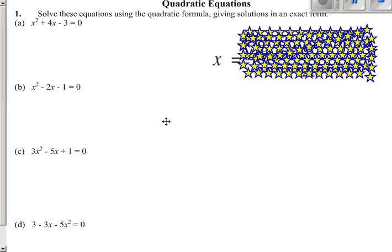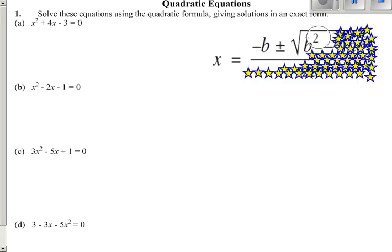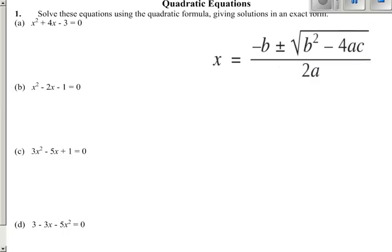The fourth review sheet is all using the quadratic formula, so the first thing you've got to do is remember what it is. This isn't in the formula book, so it's minus b plus or minus the square root of b squared minus 4ac, and this is all divided by 2a. So for each of these first questions, we've got to put these numbers into this formula.